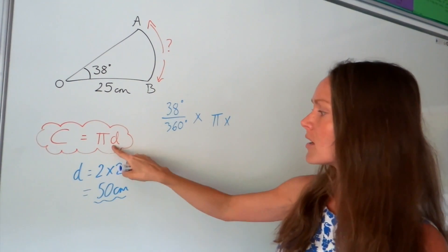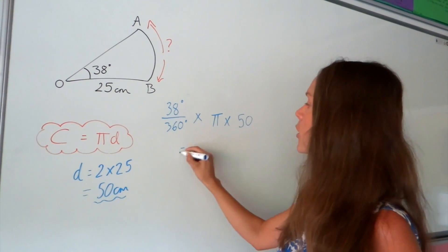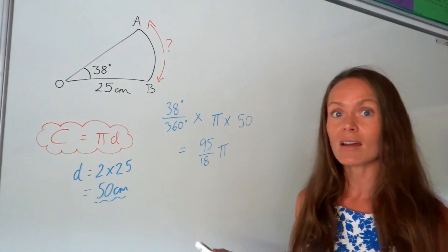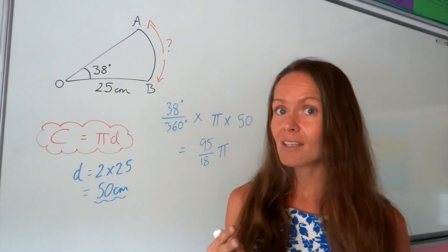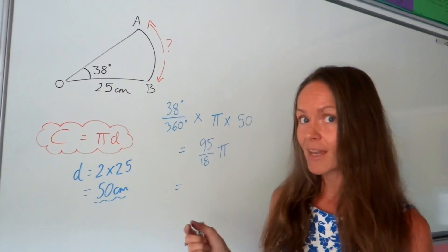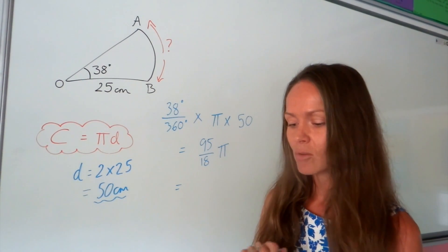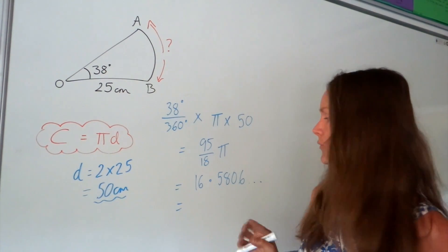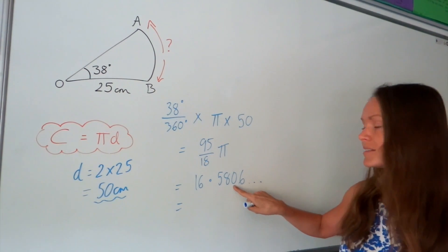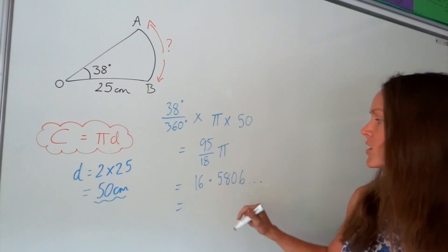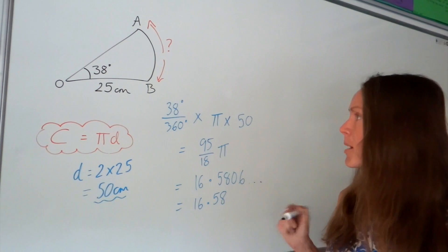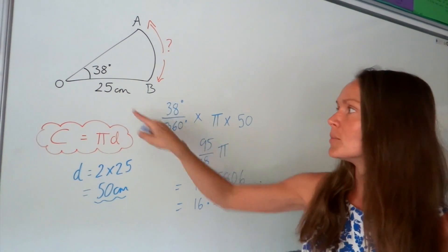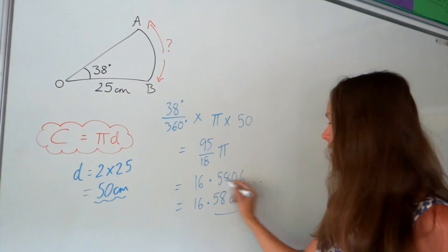We then multiply by the diameter, which we worked out as 50. When I put that in the calculator I get 95 over 18 pi, which is the answer in terms of pi, but we need to round to 4 significant figures. Pressing the SD button gives 16.5806... Rounding to 4 significant figures: one, two, three, four — the fifth figure is 0 so it doesn't change the 8, leaving 16.58. Remember this is arc length so it's a distance, and the units are just centimetres.